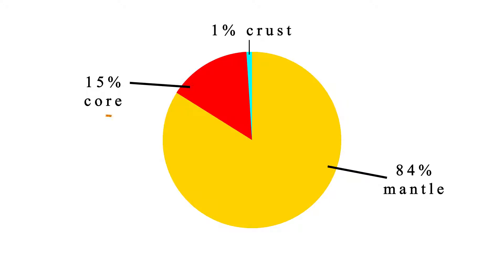Of the core itself, only 29% is the inner core, which is the deepest part of the Earth. The rest of it, 55%, is the outer core. The crust is where we live and breathe.